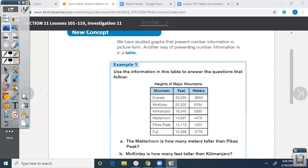So heights of major mountains is what this table is about. Under this category mountain, it gives you the name of the mountain. This tells you how tall it is in feet. This tells you how tall it is in meters. When we're reading the question, we need to make sure we look at the right column. The Matterhorn is how many meters taller than Pikes Peak. Since the question says meters, that's what we're going to do.